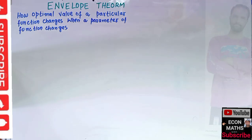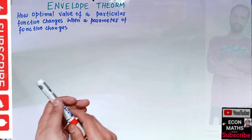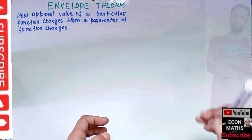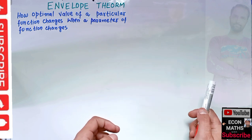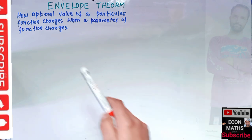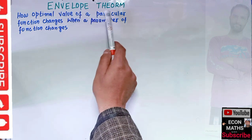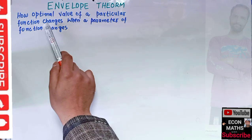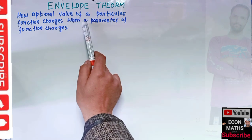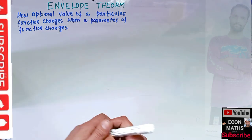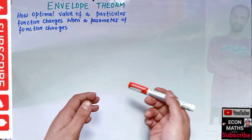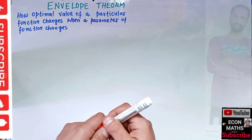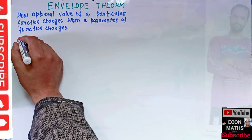In this video we will learn about the envelope theorem. Basically, it tells us how the optimal value of a particular function changes when a parameter of that function changes. Let's start with an example first.